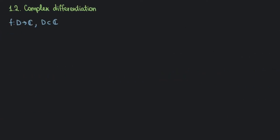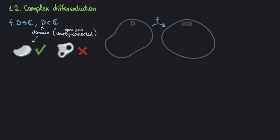Now let's consider a complex function f defined on a domain D. We map domain D to some other domain f(D). Let's replicate our construction: pick a point z₀ inside D, then give it a small complex increment h. Note that h is complex, so z₀ plus h could be to the left, to the right, or anywhere in its neighborhood. Our function f maps these points to f(z₀) and f(z₀ + h). Now write down the difference quotient — f(z₀ + h) minus f(z₀), all divided by h — and take the limit as h tends to 0. At first glance, this doesn't look too different from real derivatives. But here's a catch: since h is arbitrary, z₀ + h is not specified exactly, so it can approach z₀ from any direction.